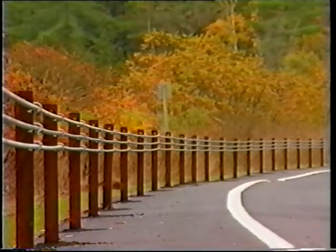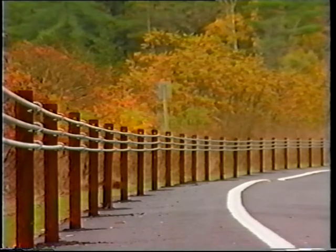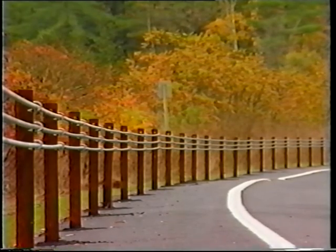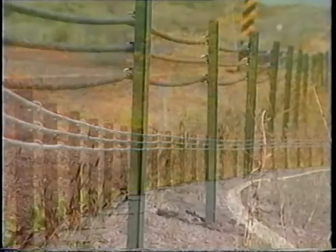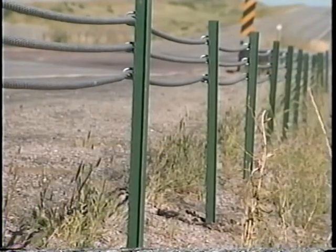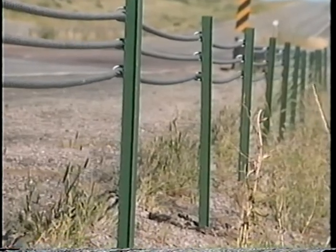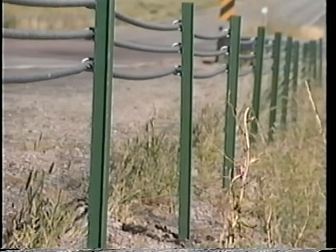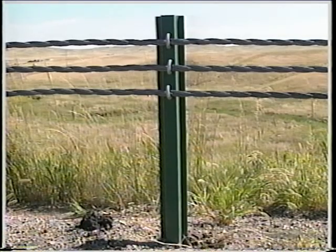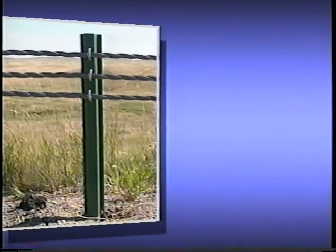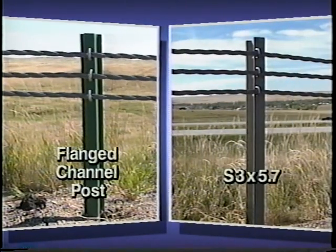In recent years, several variations of the basic G1 guardrail have been developed that reduce the cost and enhance the performance of cable guardrails. The state of South Dakota has developed a cable guardrail that is similar to the G1 system, except that a smaller, less expensive post is used. The flanged channel post used in the South Dakota system weighs only 4 pounds per foot, 40% lighter than the standard S3 by 5.7 post.